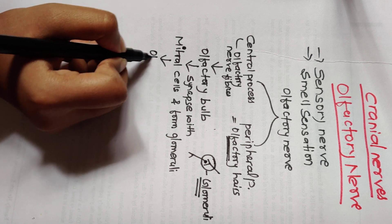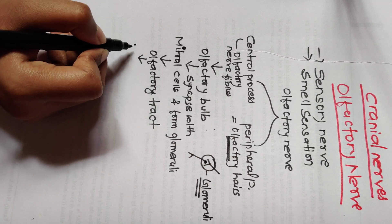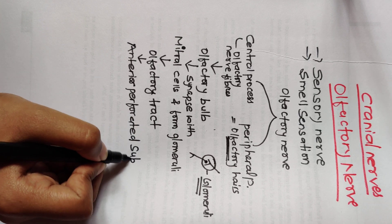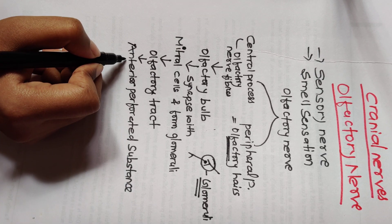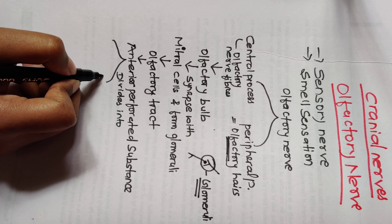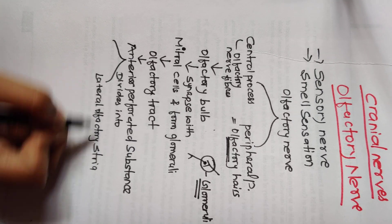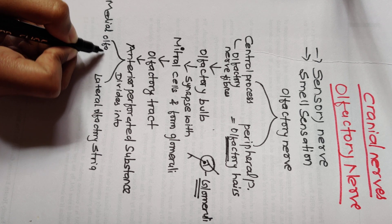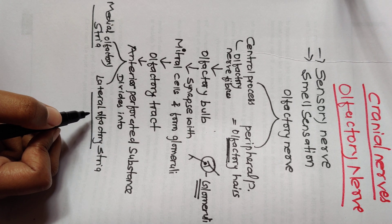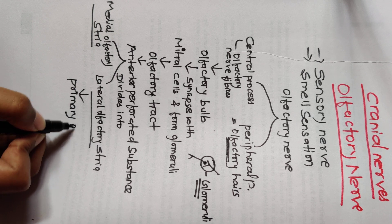From the mitral cells, the olfactory tract collectively reaches the anterior perforated substance of the brain cortex. At the anterior perforated substance, it divides into two parts: the lateral olfactory stria and the medial olfactory stria. These are part of the cerebral cortex.